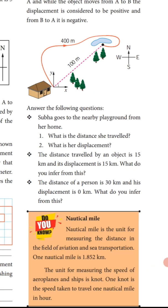Answer the following questions. First question: Subhas goes to a nearby playground from her home. What is the distance she travelled? A diagram is given in the book. Subhas travels a 400-meter path and reaches the playground. The distance she travelled is 400 meters. What is her displacement? The displacement is 100 meters.